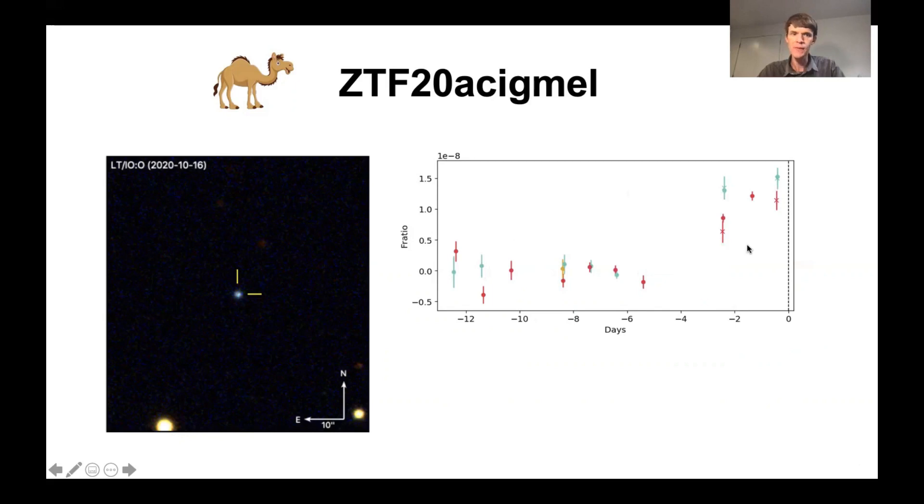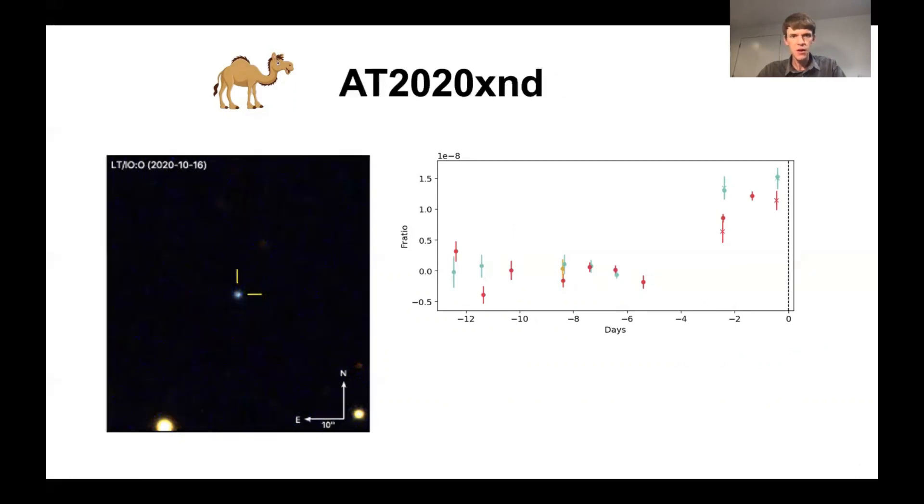We acquired follow-up imaging with the Liverpool Telescope and discovered a blue transient coincident with what was shown in catalog imaging to be a faint, potentially high-redshift galaxy and therefore very luminous. The official name of this object is AT2020XND, but in the spirit of the cow and the koala, we have nicknamed it the camel based on its ZTF name, ZTF20ACIGMEL.